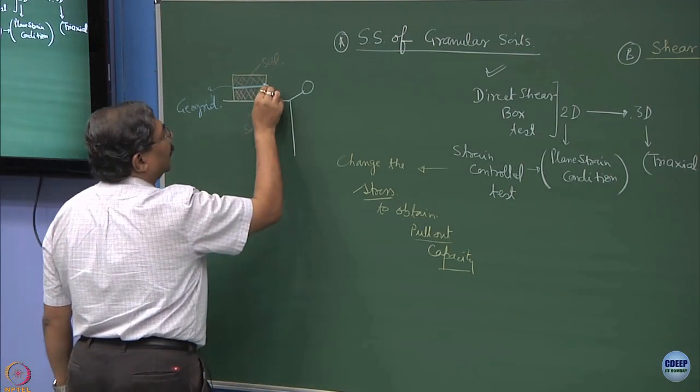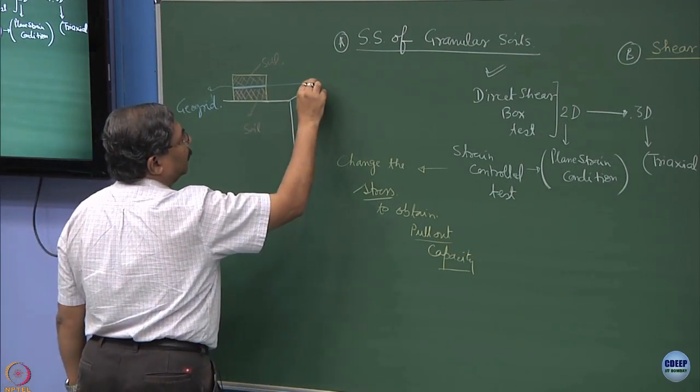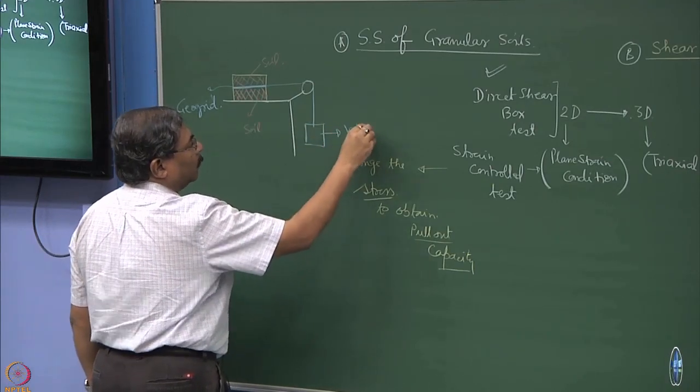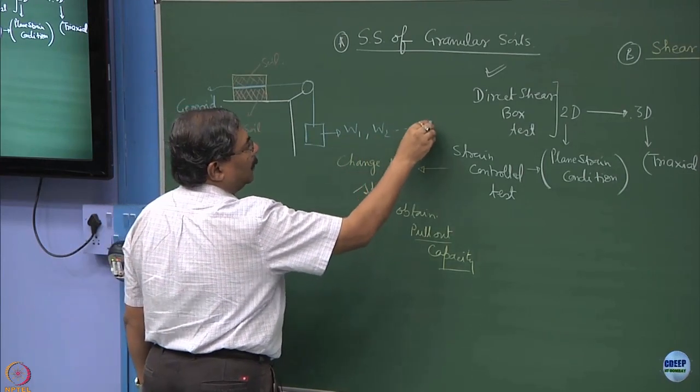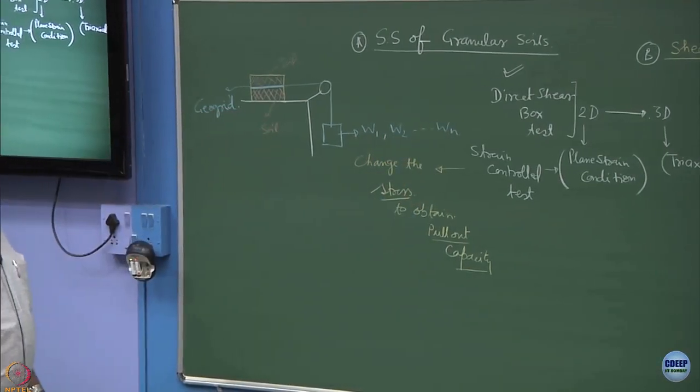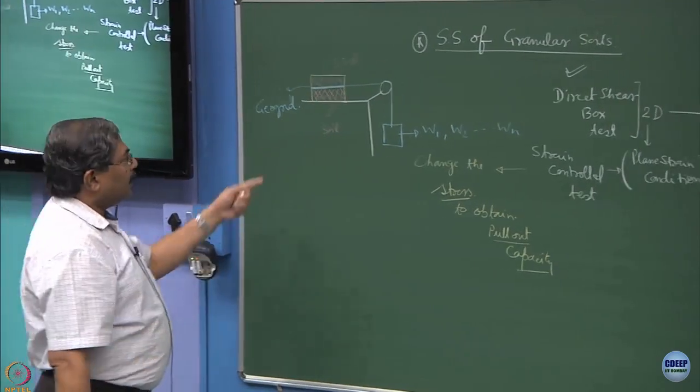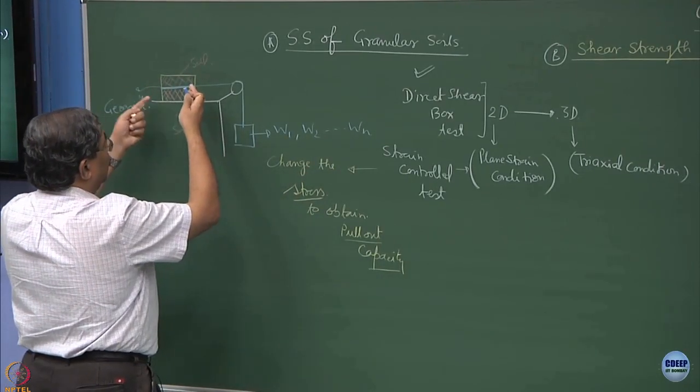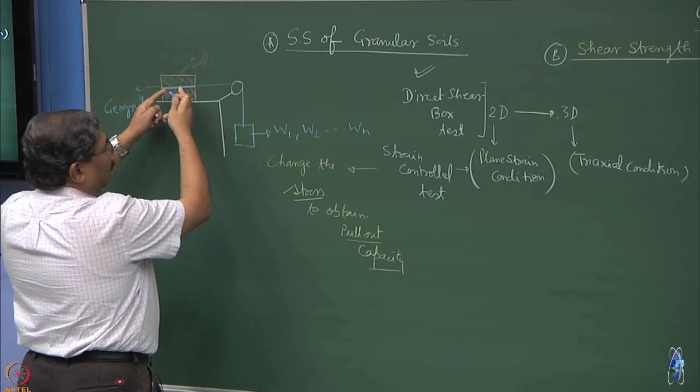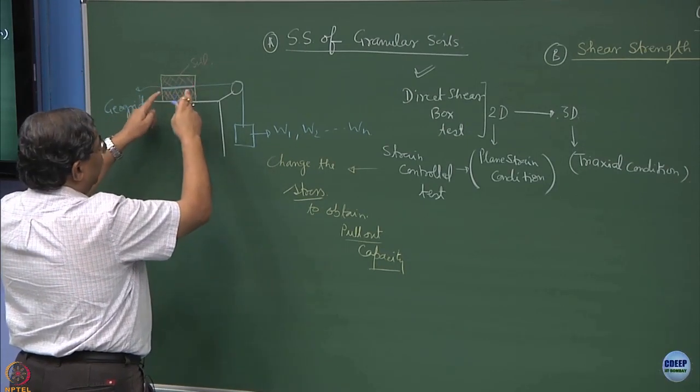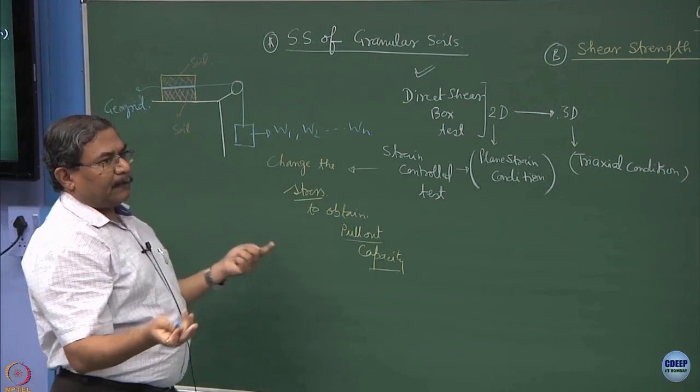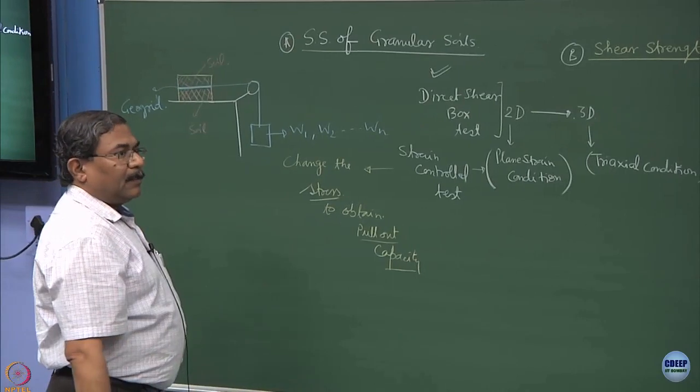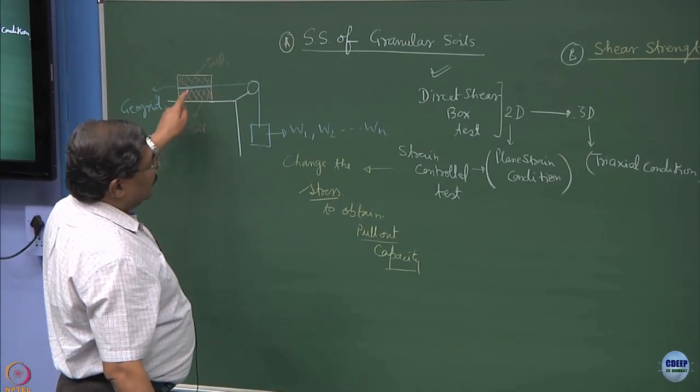So this interface happens to be let's say a geogrid, what is being used for making the reinforced earth structures when you go on the highways as you see revolts, reinforced earth walls. This is the interface and then again the top portion of the box or the sample is also filled up with the soil sample. We connect it with a thread or a wire which passes through the pulley and we apply different types of weights W1, W2 and so on until the material fails.